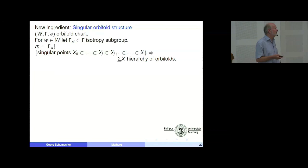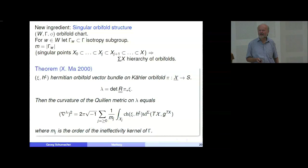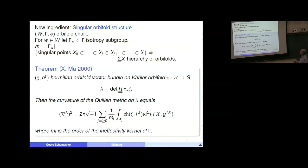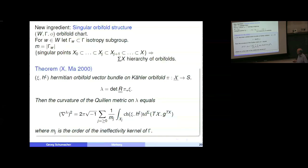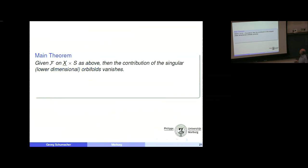What we have gotten is the same formula: in Ma's and Bismut's notation we have λ² which is the curvature, and the same integrand, but now there is a sum over the orbifolds from our hierarchy. The m_j's are the order of the injectivity kernel of Γ. When we apply this to our orbifold structure, looking at Hermitian-Einstein orbifold vector bundles, we can see that the contribution of the singular orbifold vanishes and we have the same result.